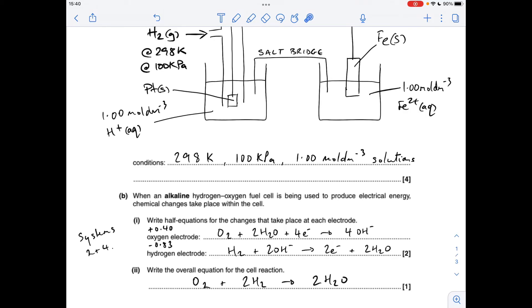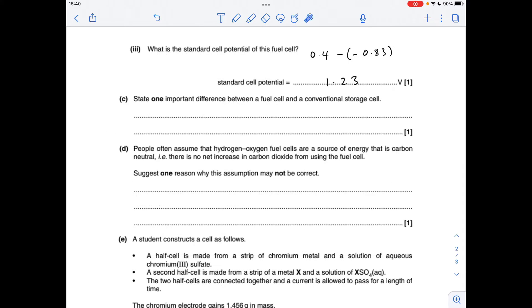This gives us this equation here for the cell. The standard cell potential of the fuel cell, well, most positive minus least gives 1.23 volts.